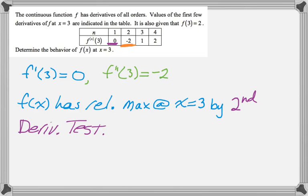And if you don't remember, f prime being 0 tells us that we have a horizontal tangent line. And then the second derivative being less than 0 tells us that we are concave down. So the picture kind of looks like that. So it must be a relative maximum.